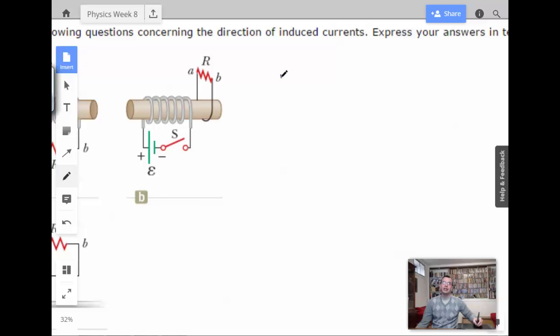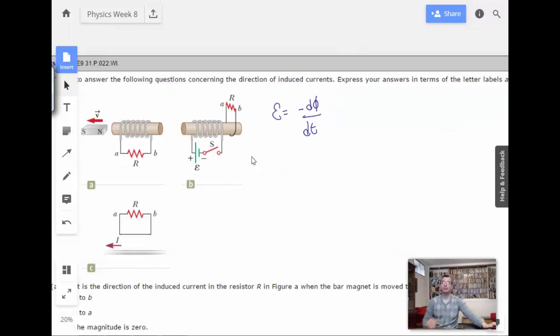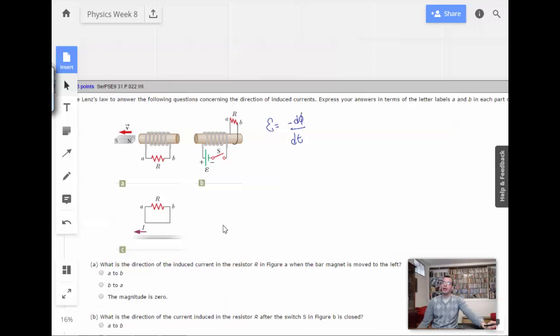So math, i.e. Lenz's Law, electromagnetic force, which is voltage, equals minus dΦ/dt. And you just solve this. I like to do it both ways. That way, if they agree, then I'm probably right. And if they disagree, then I probably did something wrong.